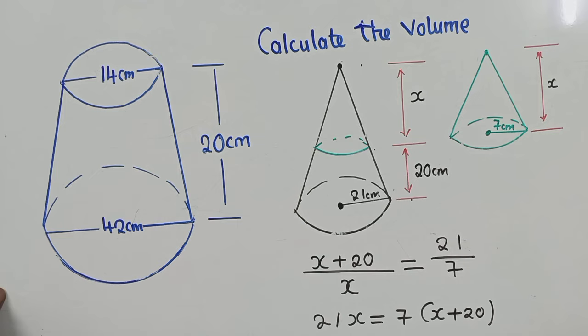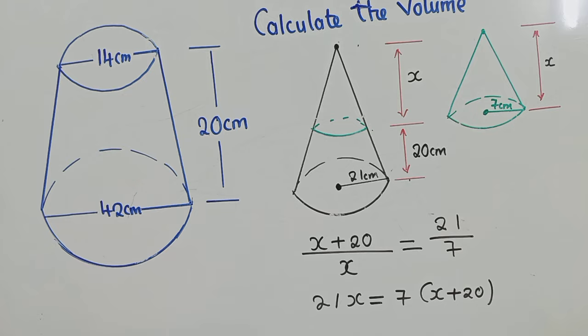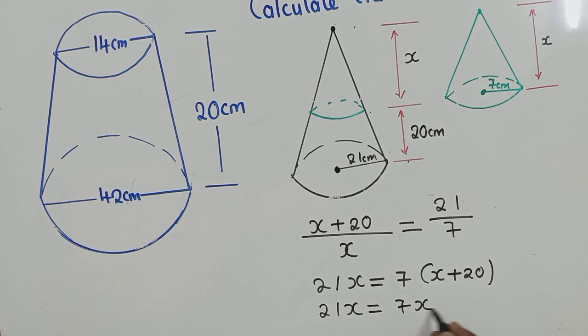So here, the idea is just to cross multiply. This by this is what we have here. This by this is what we have over here. So we're getting 21x is equal to 7x plus 140. So 7 times 20 is 140, 7 times x is 7x.